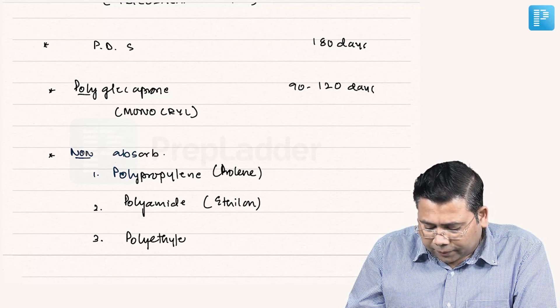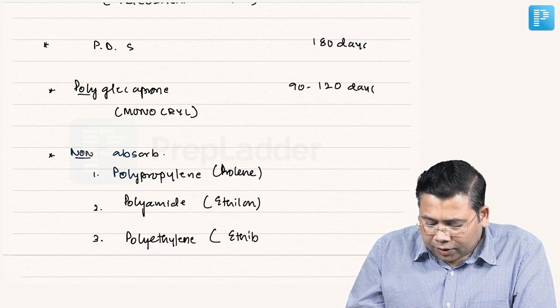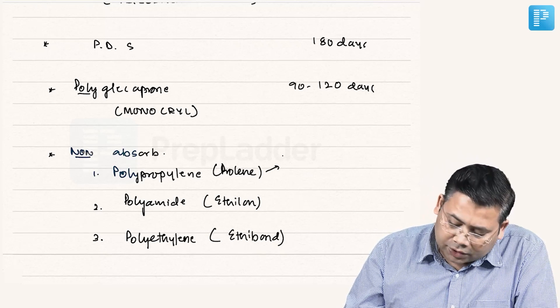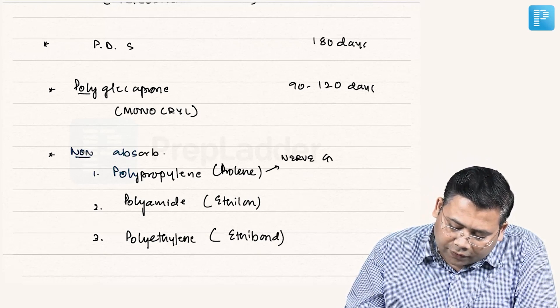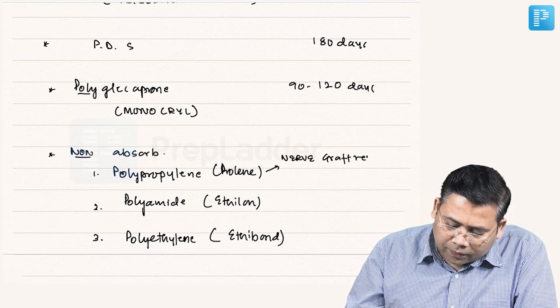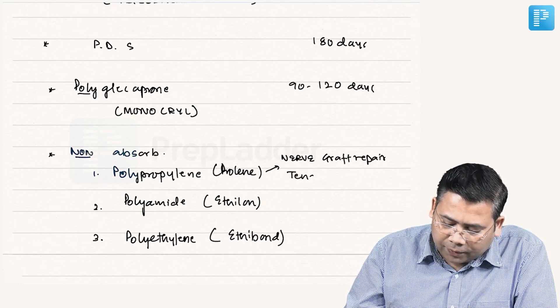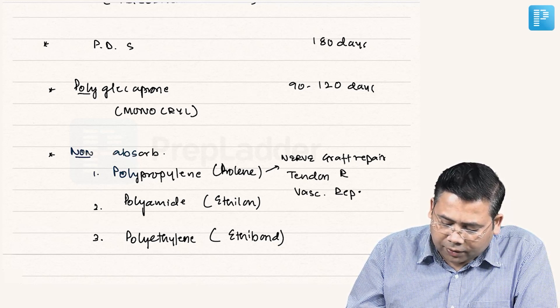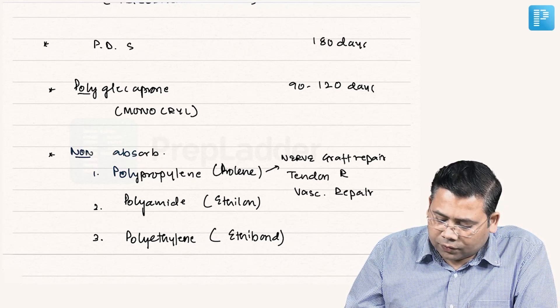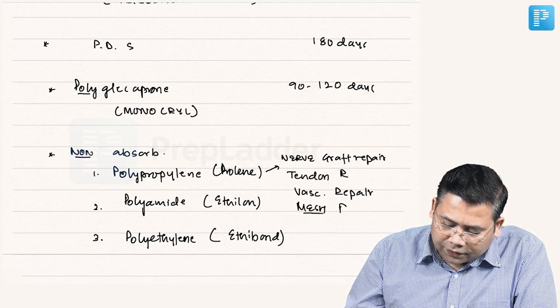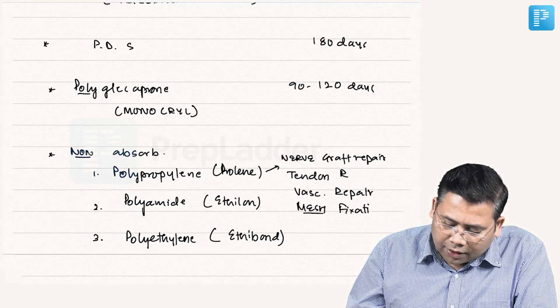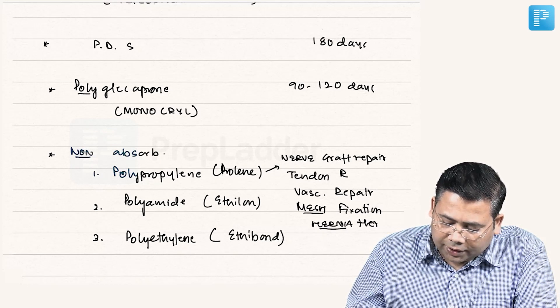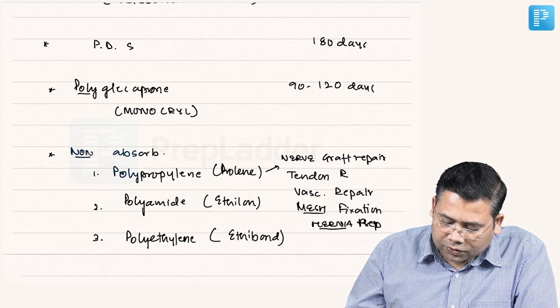Then we have Ethilon, then we have polyethylene. This is polyamide, this is polyethylene. Polyethylene is Ethibond. We use it, this is ideal suture. So if you talk about Prolene, where do we use it? For nerve graft repair, for tendon repairs, we use it for vascular repair. We also use it for your mesh fixation. We use it for hernia repairs. You can also close the abdomen if you don't have a PDS. So hernia repair also we use this.